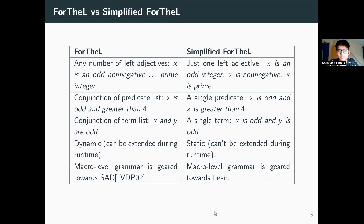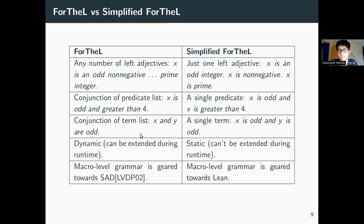There are some differences between FODL and Simplified FODL. In FODL an entity can have any number of left adjectives — one can write 'x is an odd non-negative prime integer' — but in Simplified FODL one can have only a single left adjective, so one has to write multiple sentences or join them with 'and'. In FODL it is possible to have a conjunction of predicate list, so one can write 'x is odd and greater than four', but in Simplified FODL one has to write two separate sentences. Similarly, conjunction of term lists is allowed in FODL but not in Simplified FODL.